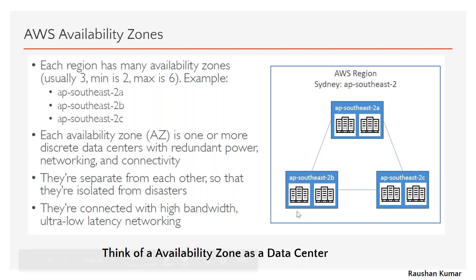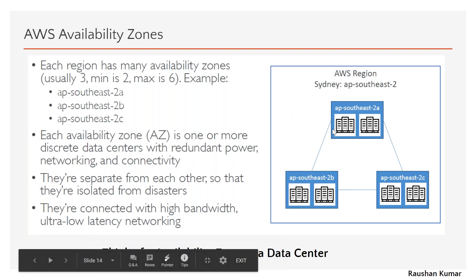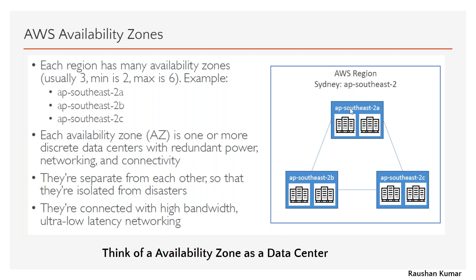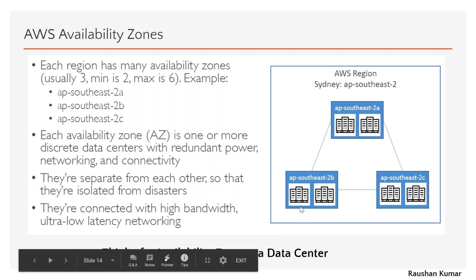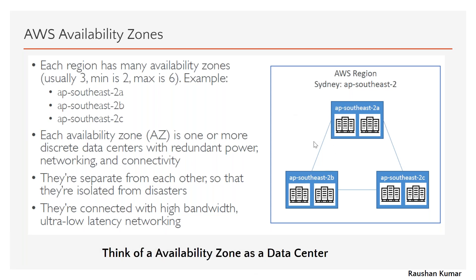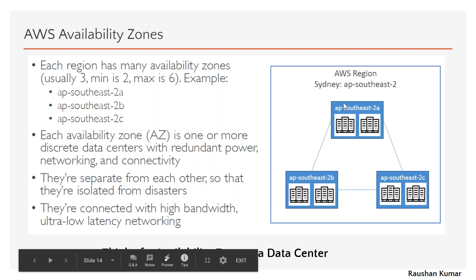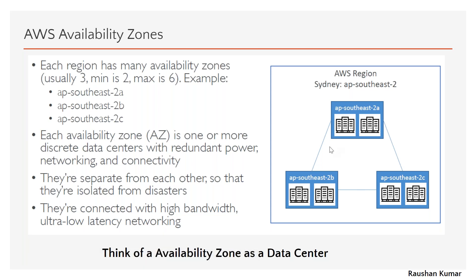All data centers in one region are connected with high-bandwidth, ultra-low-latency networking. That's because you might deploy a load balancer in one AZ and servers in other AZs, so they must be able to communicate very fast. It's physical cable with amplifiers and high-speed connectivity. Just know: the connectivity among these data centers uses very high bandwidth and ultra-low latency.